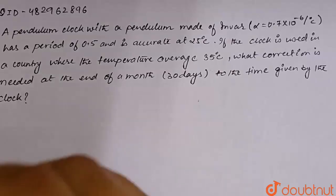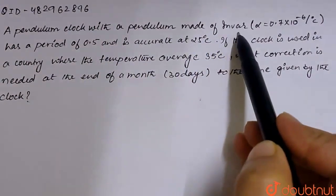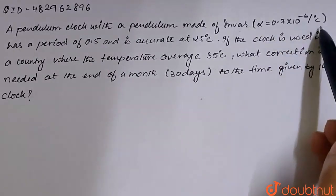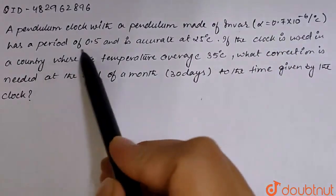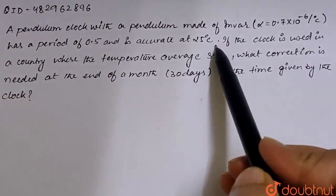So our question is: a pendulum clock with a pendulum made of invar, whose linear expansion coefficient is 0.7 into 10 to the power minus 6 per degree celsius, has a period of 0.5 seconds and is accurate at 25 degrees celsius.